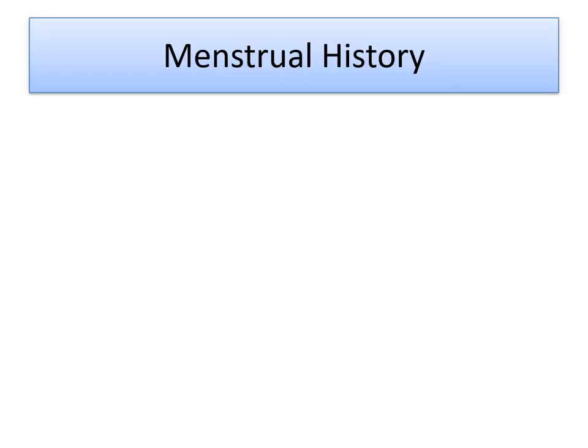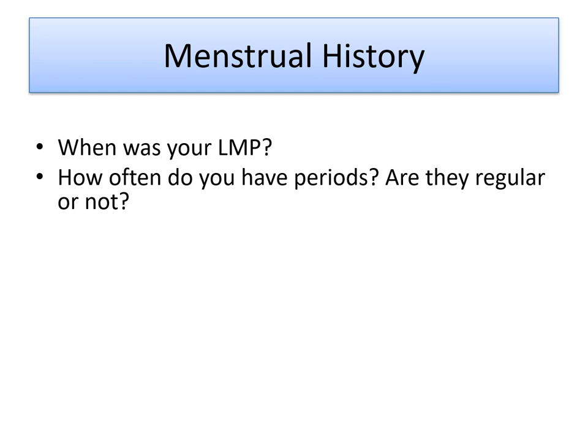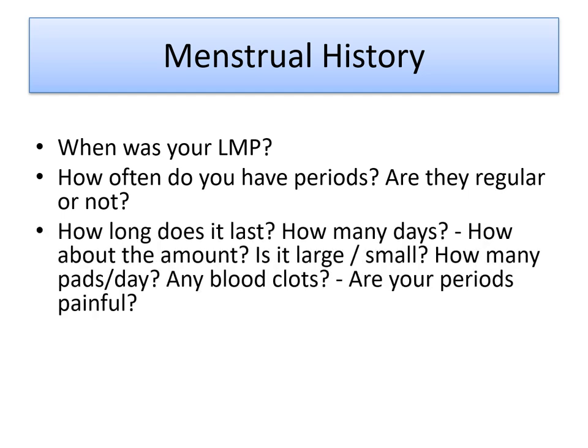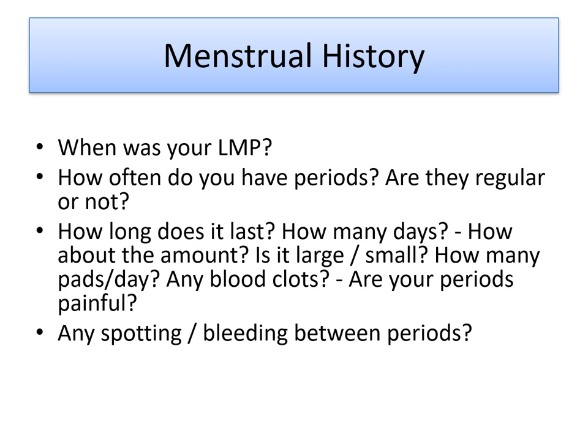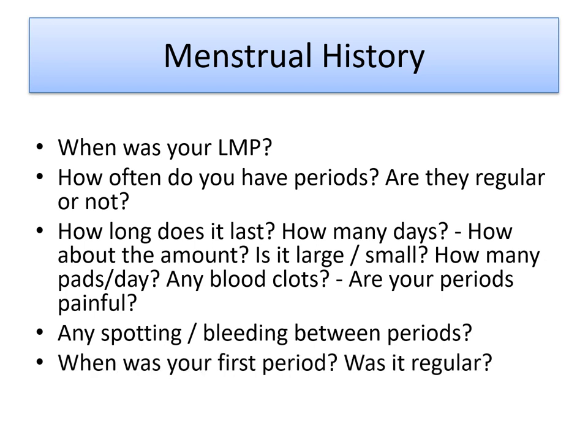Questions related to menstrual history include: When was your last menstrual period? How often do you have periods? Are they regular? How long does it last? How many days? How about the amount — is it large or small? How many pads per day? Any blood clots? Are your periods painful? Any spotting or bleeding between periods? When was your first period? Was it regular?